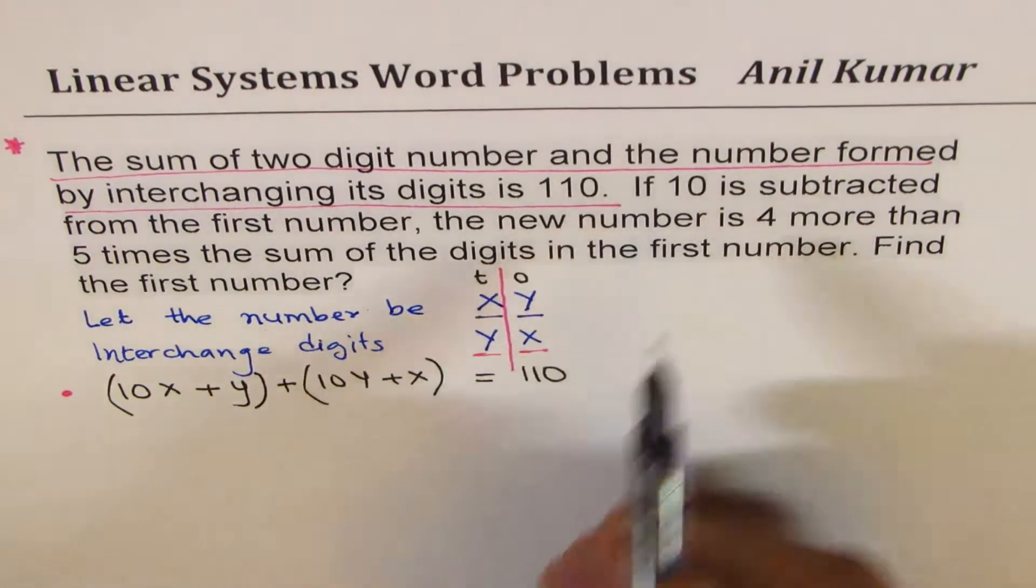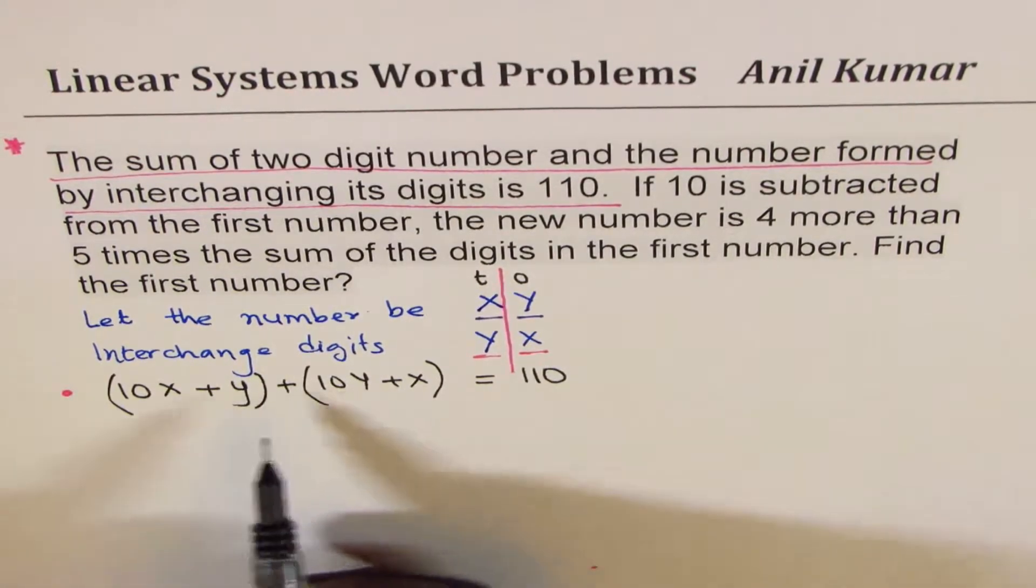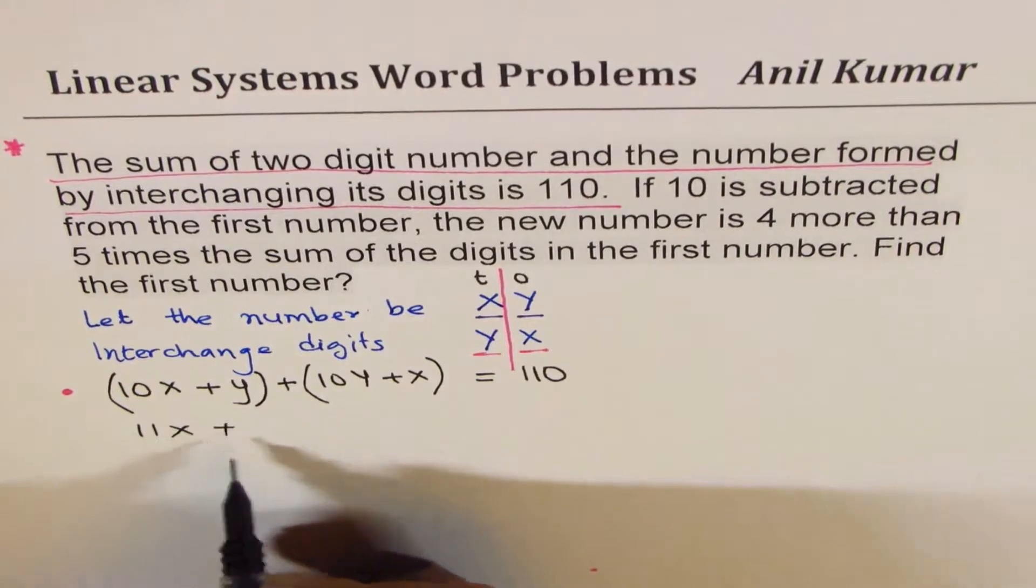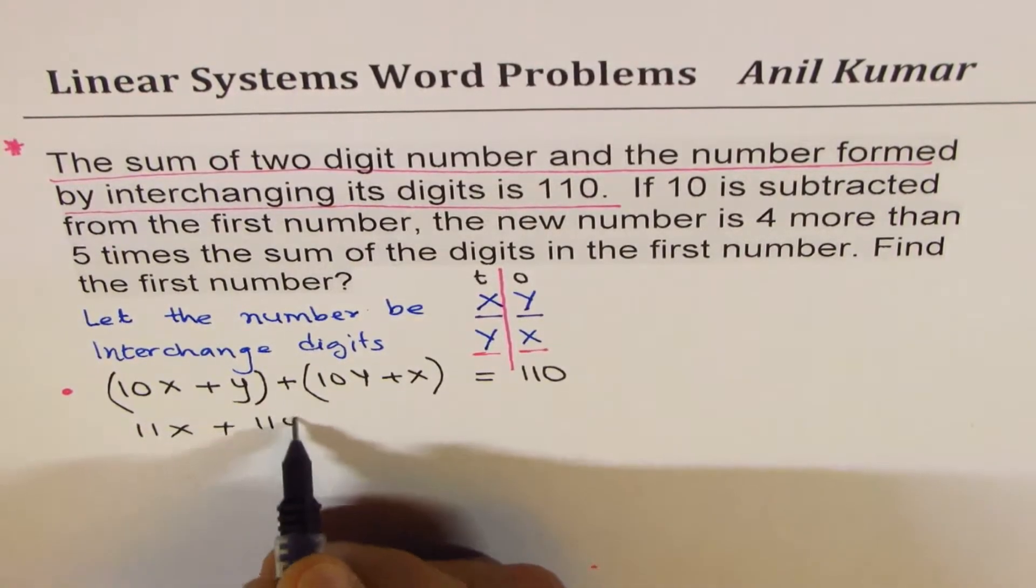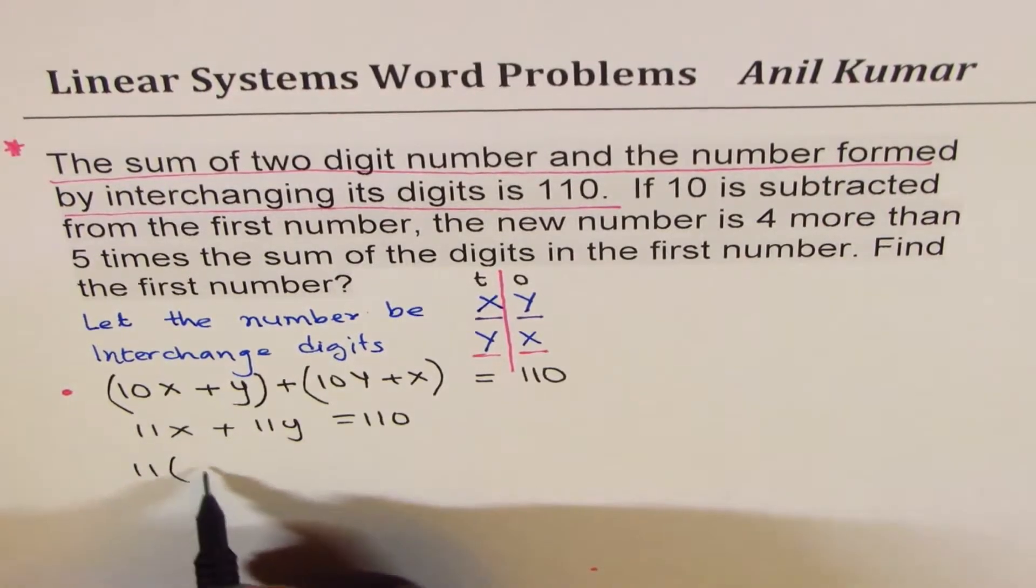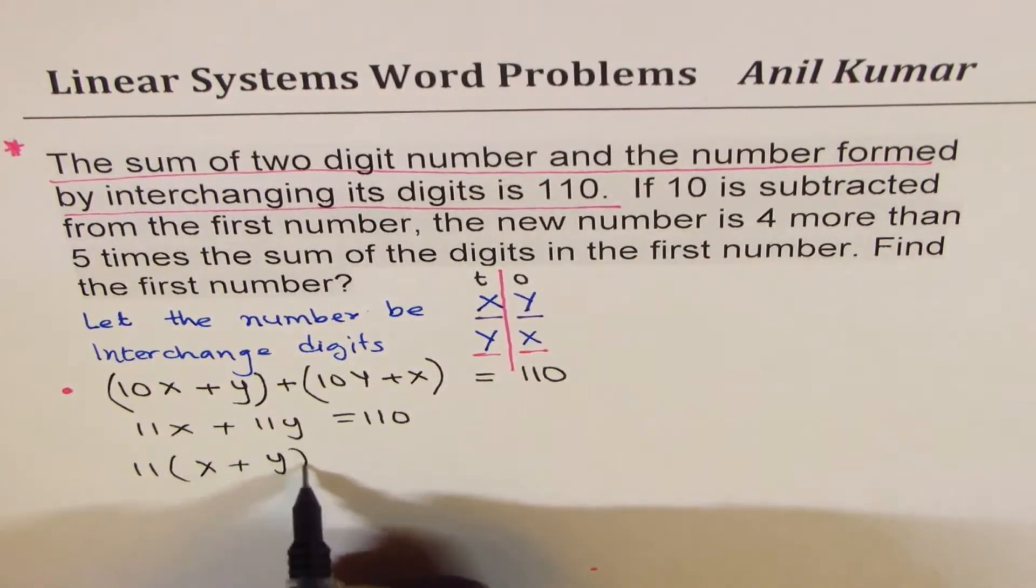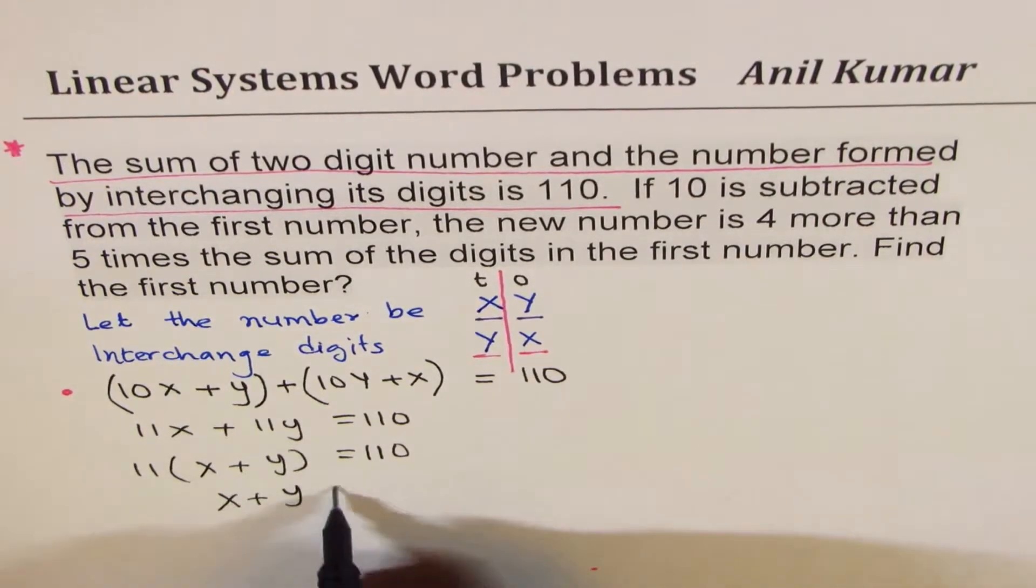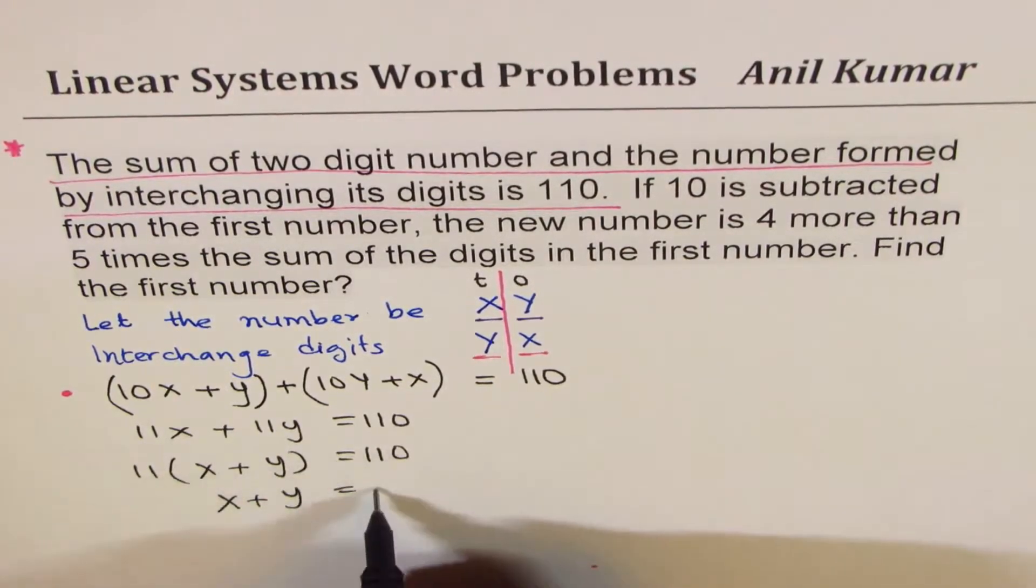Now, the second equation is, let me simplify this. 10x plus x is 11x, so we get 11x plus y plus 10y is 11y, is 110. So 11 is common, x plus y is 110, or you can say x plus y is, when you divide by 11, is 10.